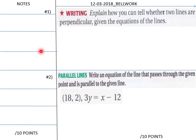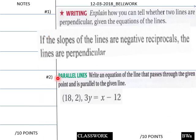Welcome back. Let me get ready to give you some solutions here for your bellwork. There is number one. The lines are perpendicular if the slopes of the lines are negative reciprocals.